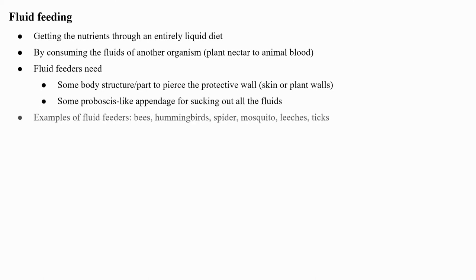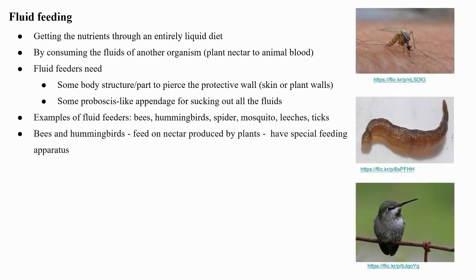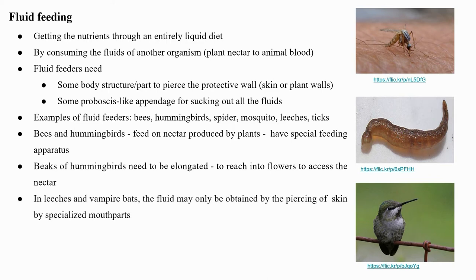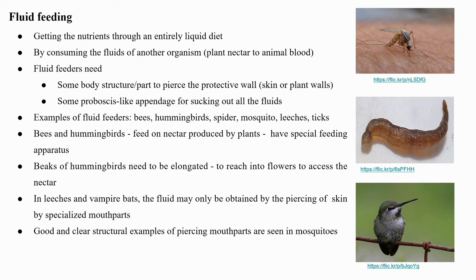Examples of fluid feeders are bees, hummingbirds, spiders, mosquitoes, leeches, and ticks. Bees and hummingbirds feed on nectar produced by plants and have special feeding apparatus; for example, the beaks of hummingbirds need to be elongated to enable them to reach into flowers to access the nectar. In other animals such as leeches and vampire bats, the fluid may only be obtained by piercing of skin by specialized mouth parts. Clear structural examples of piercing mouth parts are seen in insects such as mosquitoes.